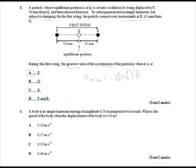A body in simple harmonic motion with an amplitude of 0.5 meters and a period of 4π seconds - what is the speed when the displacement of the body is 0.3 meters? So we're looking for an equation relating speed or velocity to displacement. That equation is v equals 2πf times the square root of a squared minus x squared.